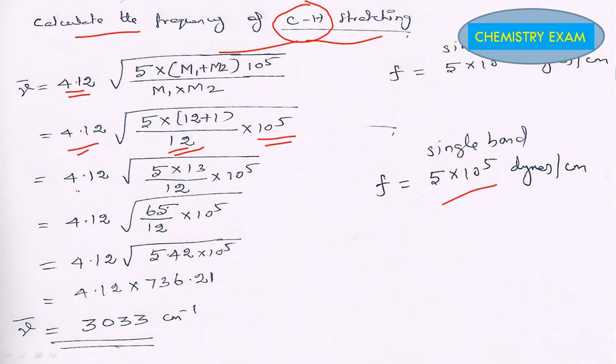So we can keep this 4.12 like this: 5×(12+1), which is 13. The denominator value we can keep like that, times 10^5. So 4.12 times the square root of 5×13, which is 65, divided by 12 times 10^5. Next step.